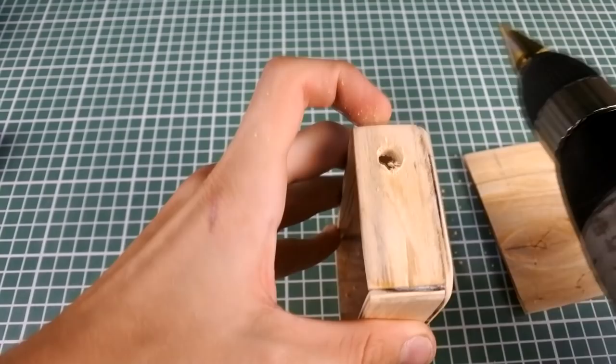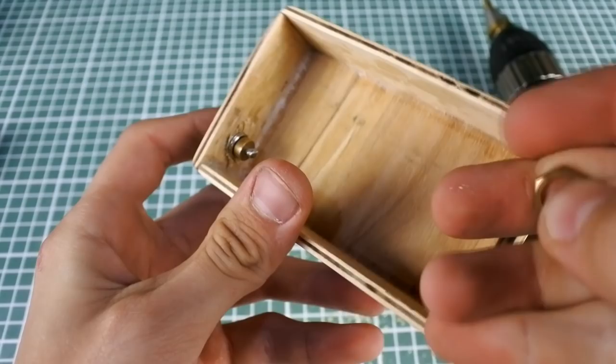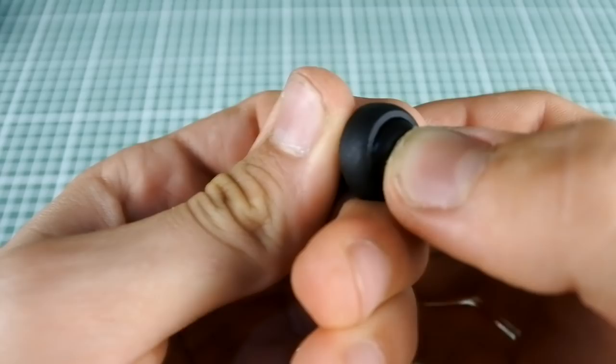Now it is the turn for parts that I bought on AliExpress. Links are in the description. First of all, we need to take 510 connector, drill the hole for it in wood and twist the nut.